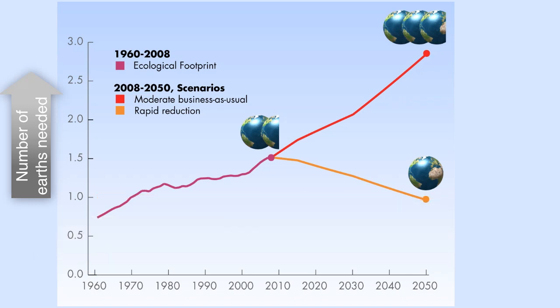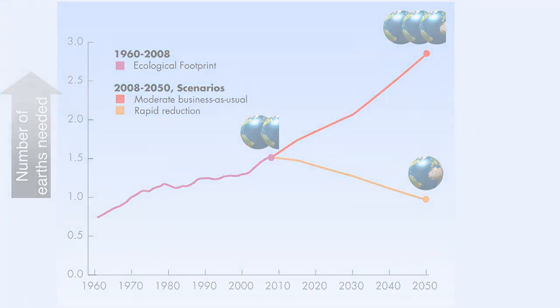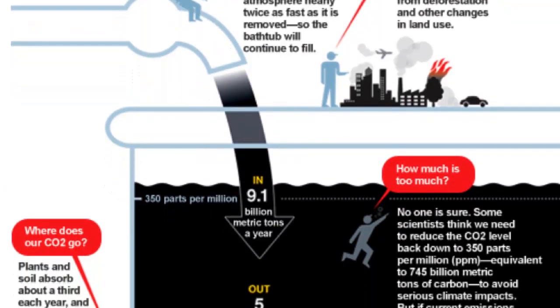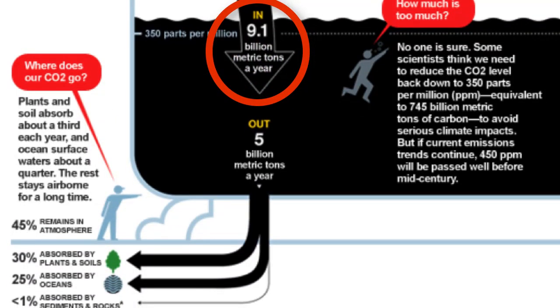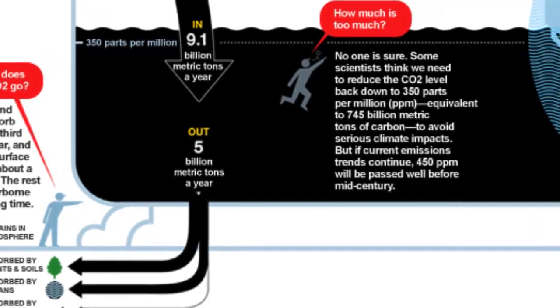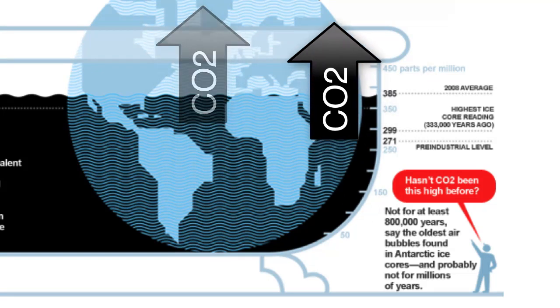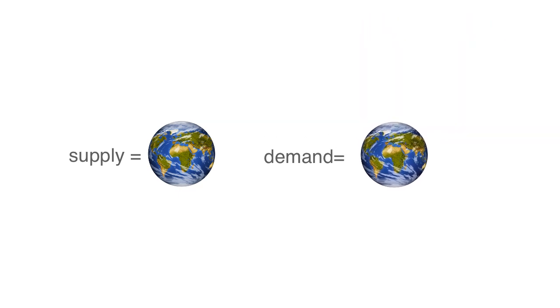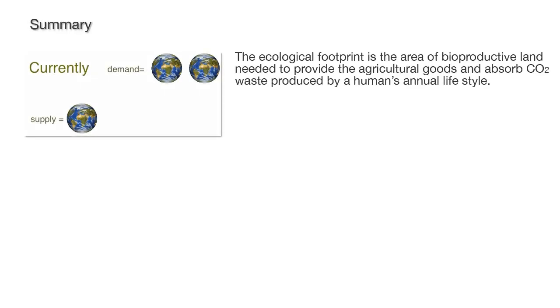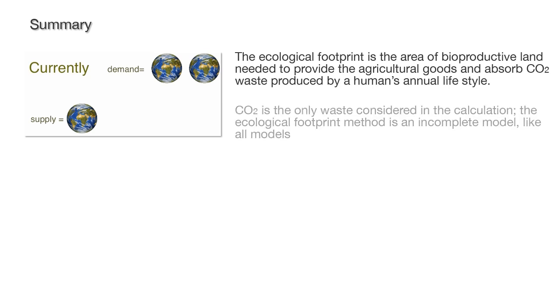Of course, demanding more than one earth's supply is not possible. When you look more closely at the numbers, the overshoot is almost entirely due to the fact that we are globally producing more carbon dioxide from burning fossil fuels than what the earth can assimilate. This results in an accumulation of CO2 in the atmosphere. What's needed is a shift in human activity so that we can bring demand and supply into balance.